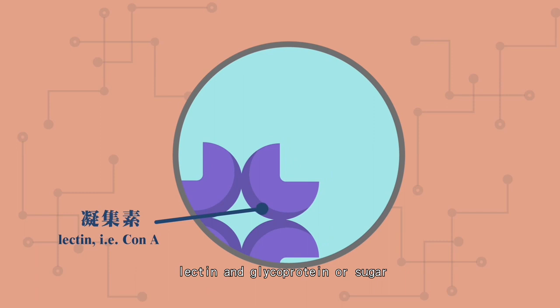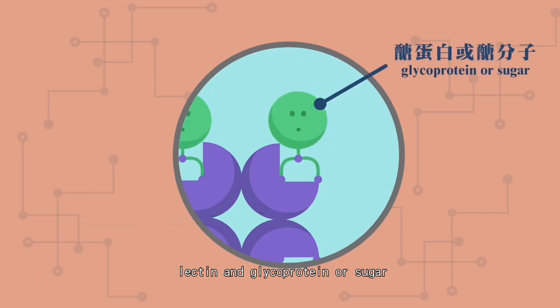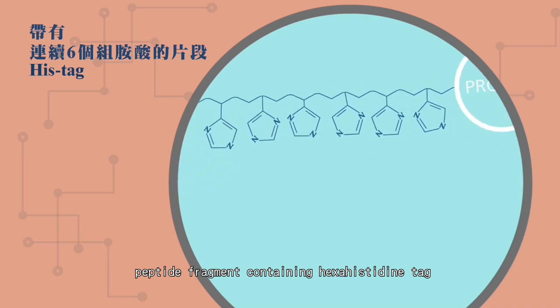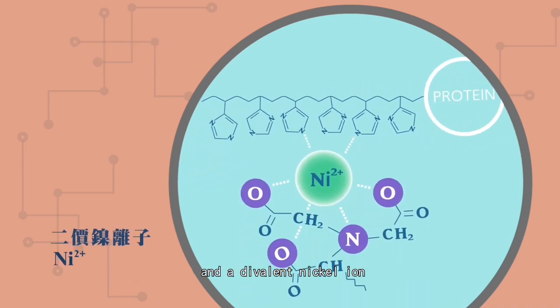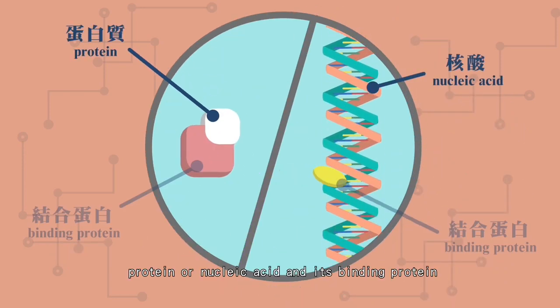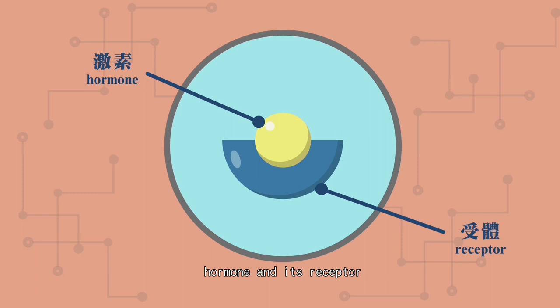Lectin and glycoprotein or sugar, peptide fragment containing hexahistidine tag and a divalent nickel ion, protein or nucleic acid and its binding protein, hormone and its receptor.